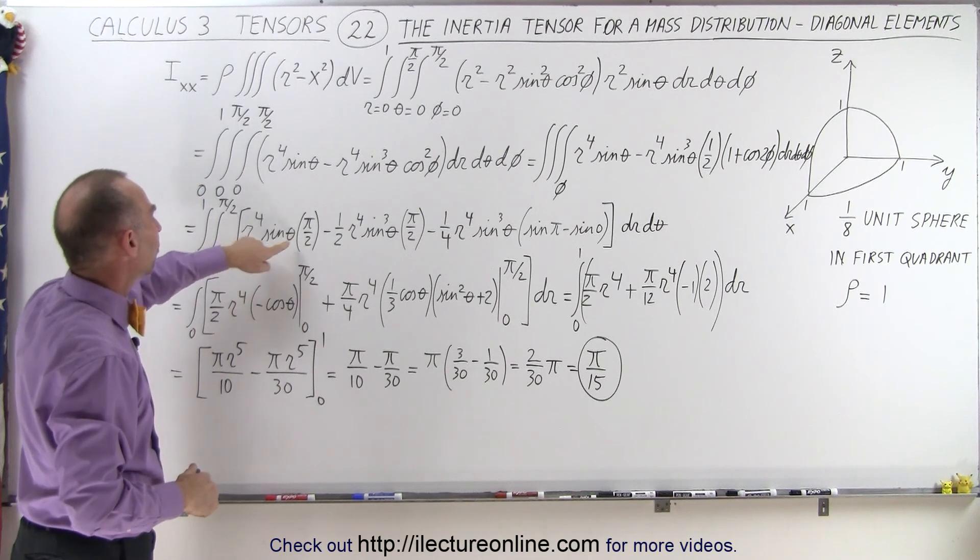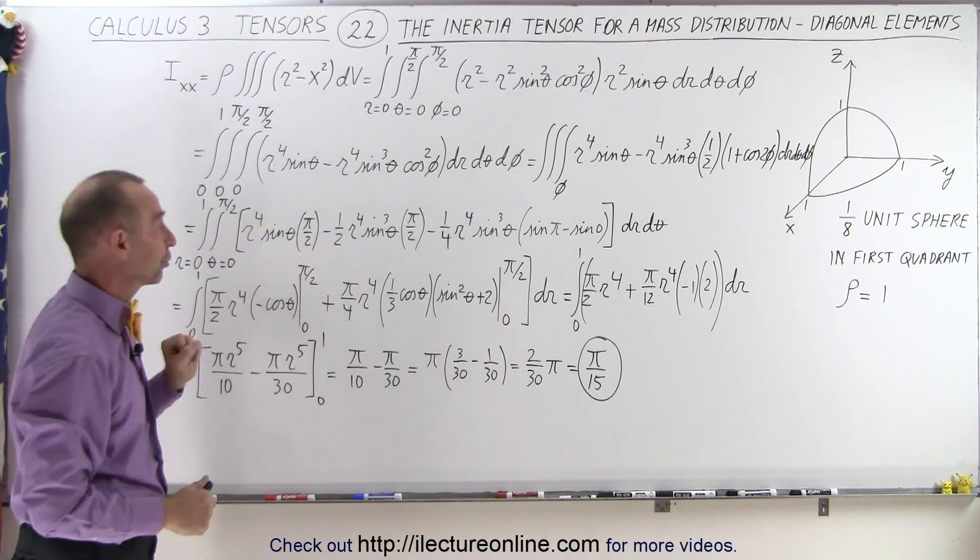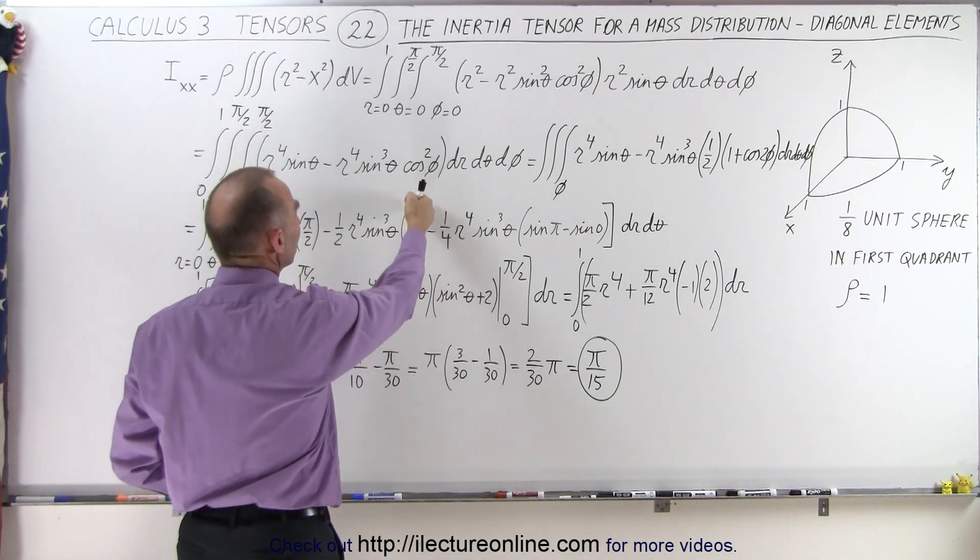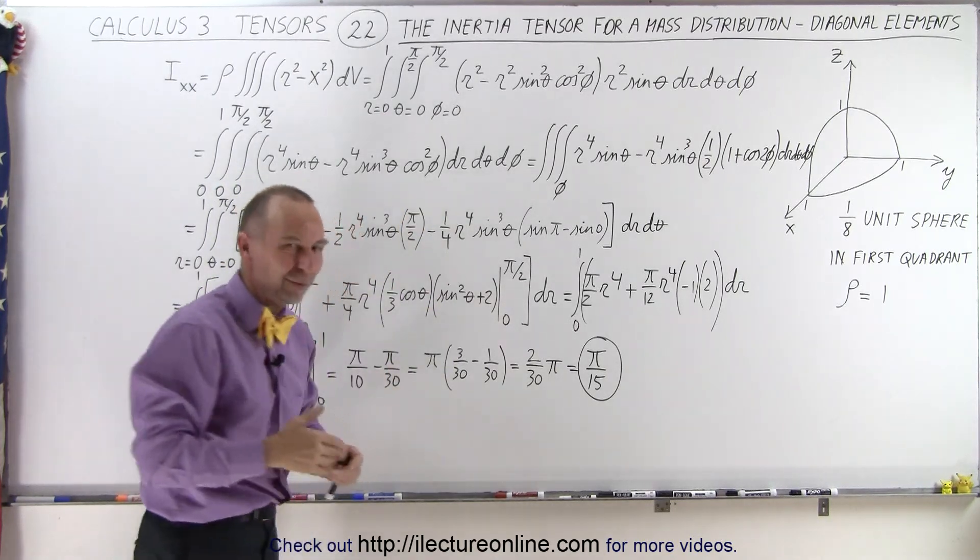Here, when we integrate this, we get phi evaluated from 0 to pi over 2, which gives us pi over 2. Here, we don't have a phi either, so that's simply again times phi, which becomes pi over 2 when we plug in the limits.